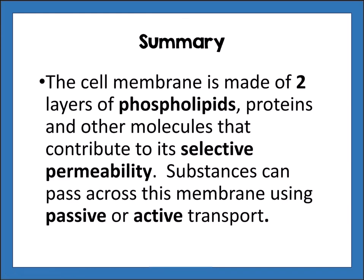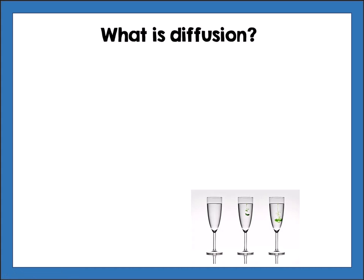In summary, the cell membrane is made of two layers of phospholipids, proteins, and other molecules that contribute to its selective permeability. Substances can pass across this membrane using passive or active transport.